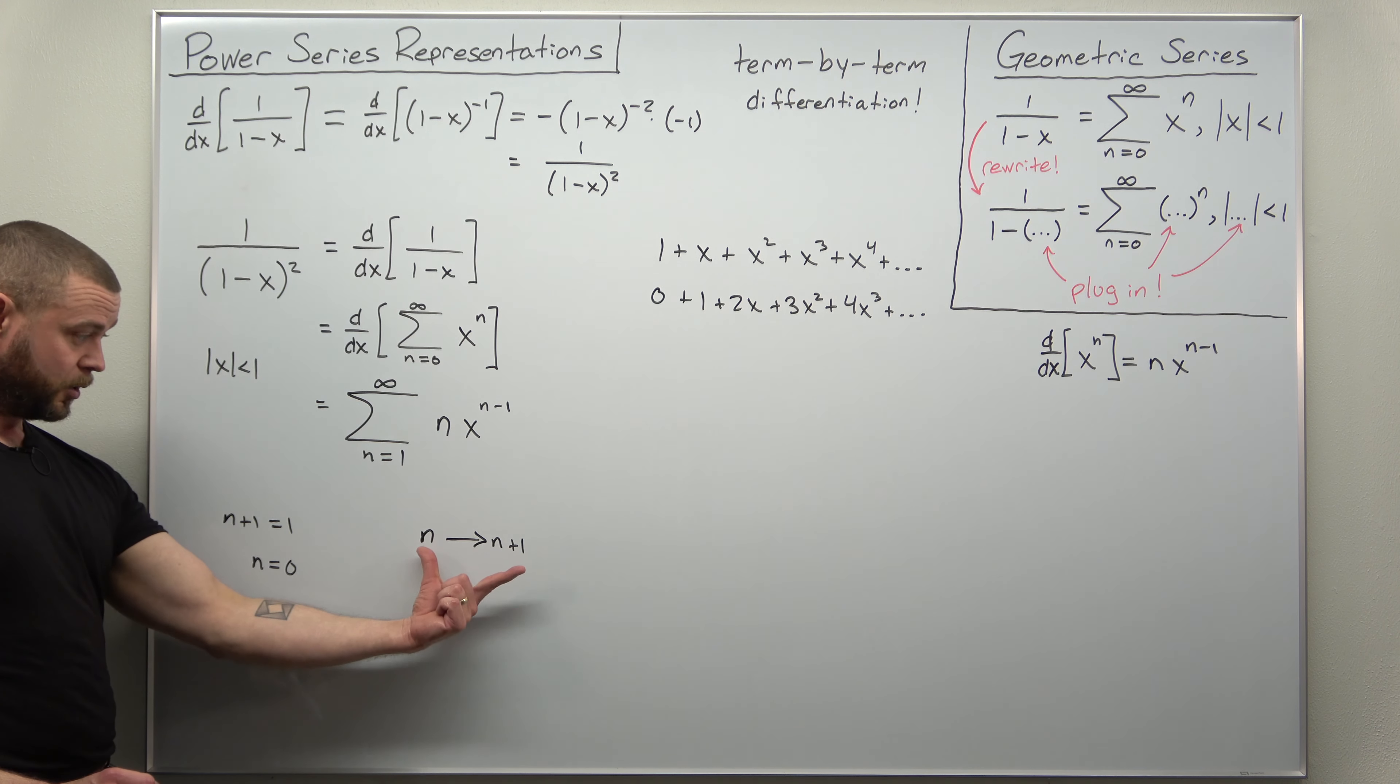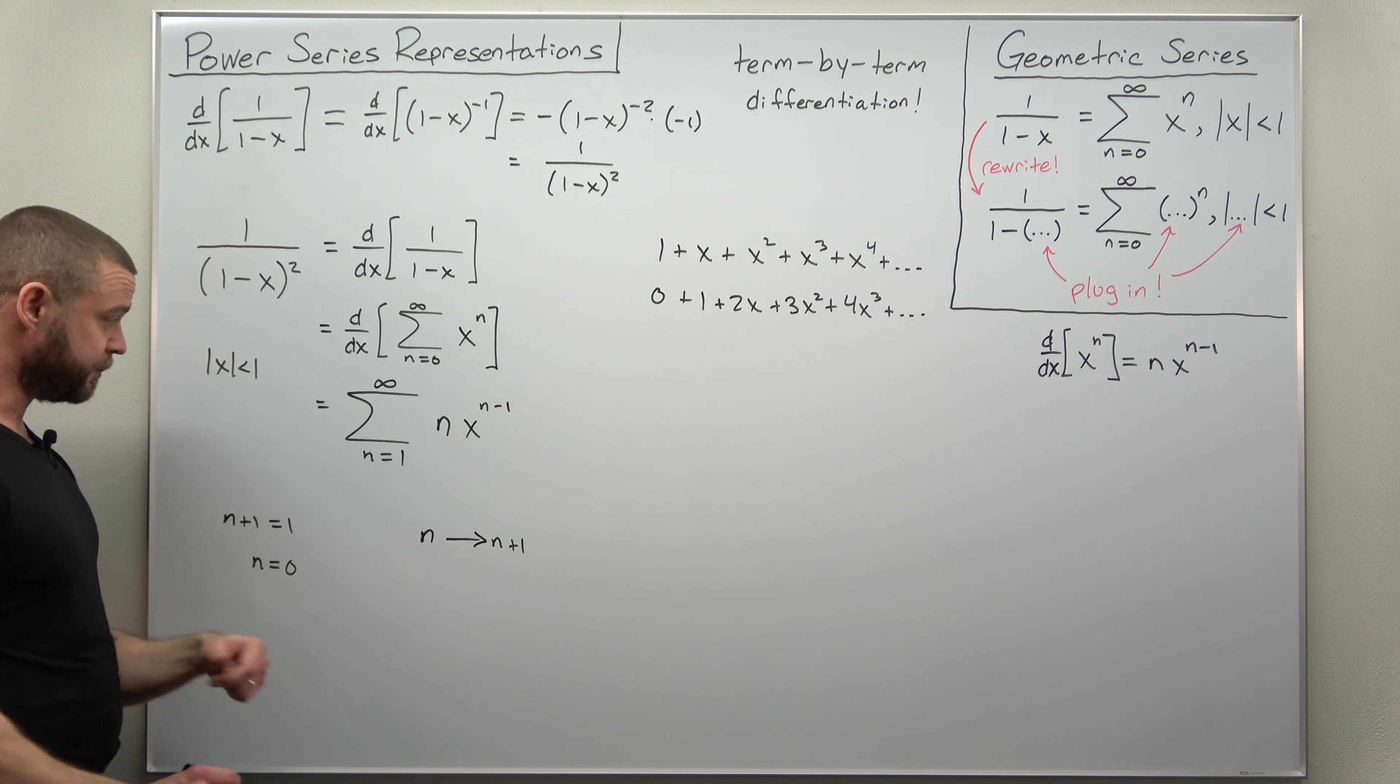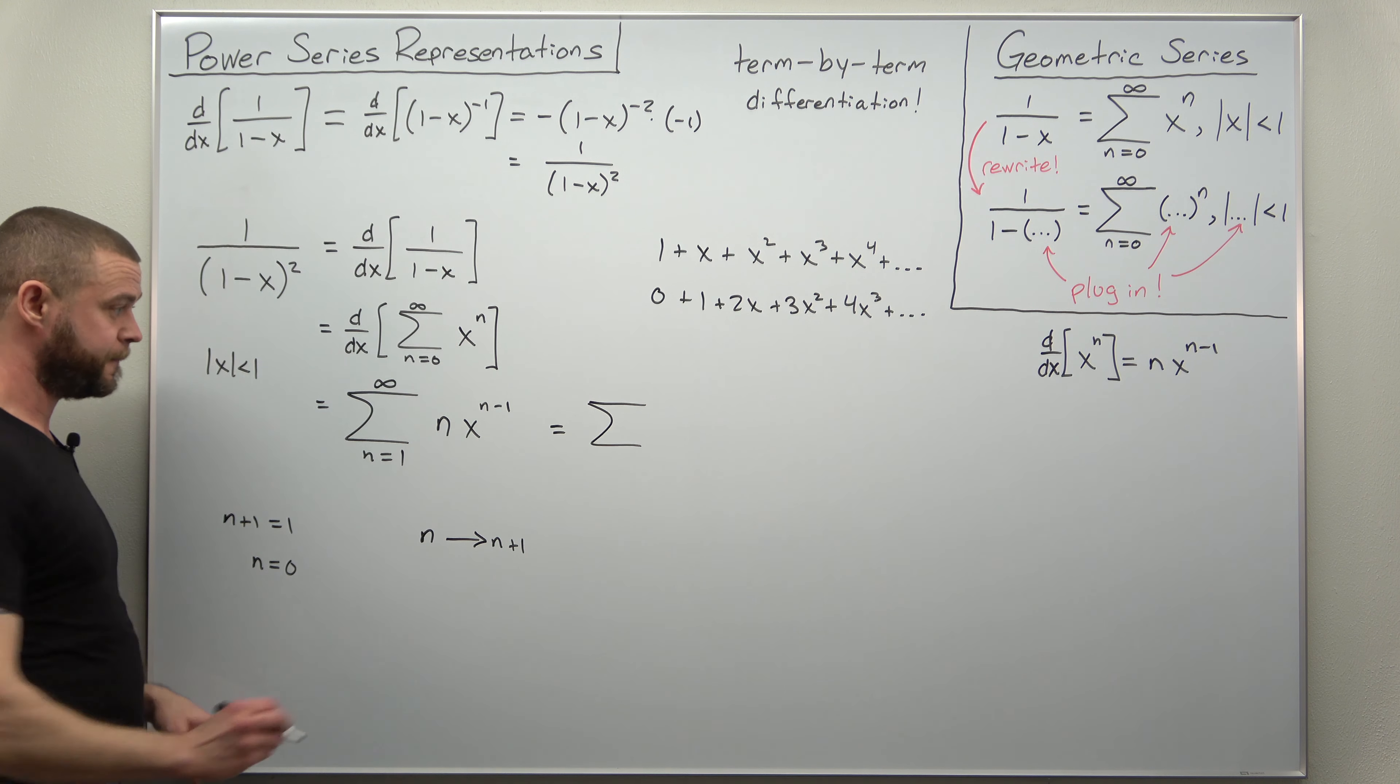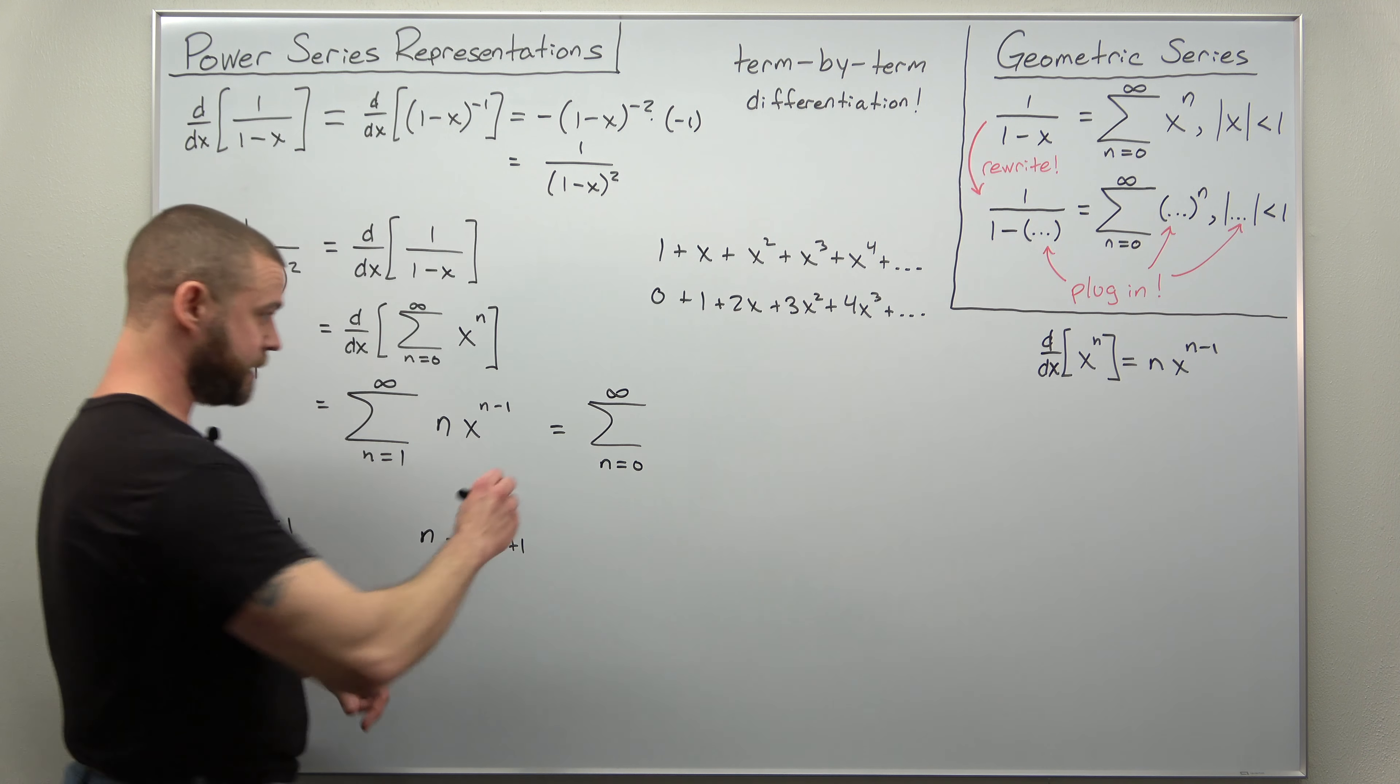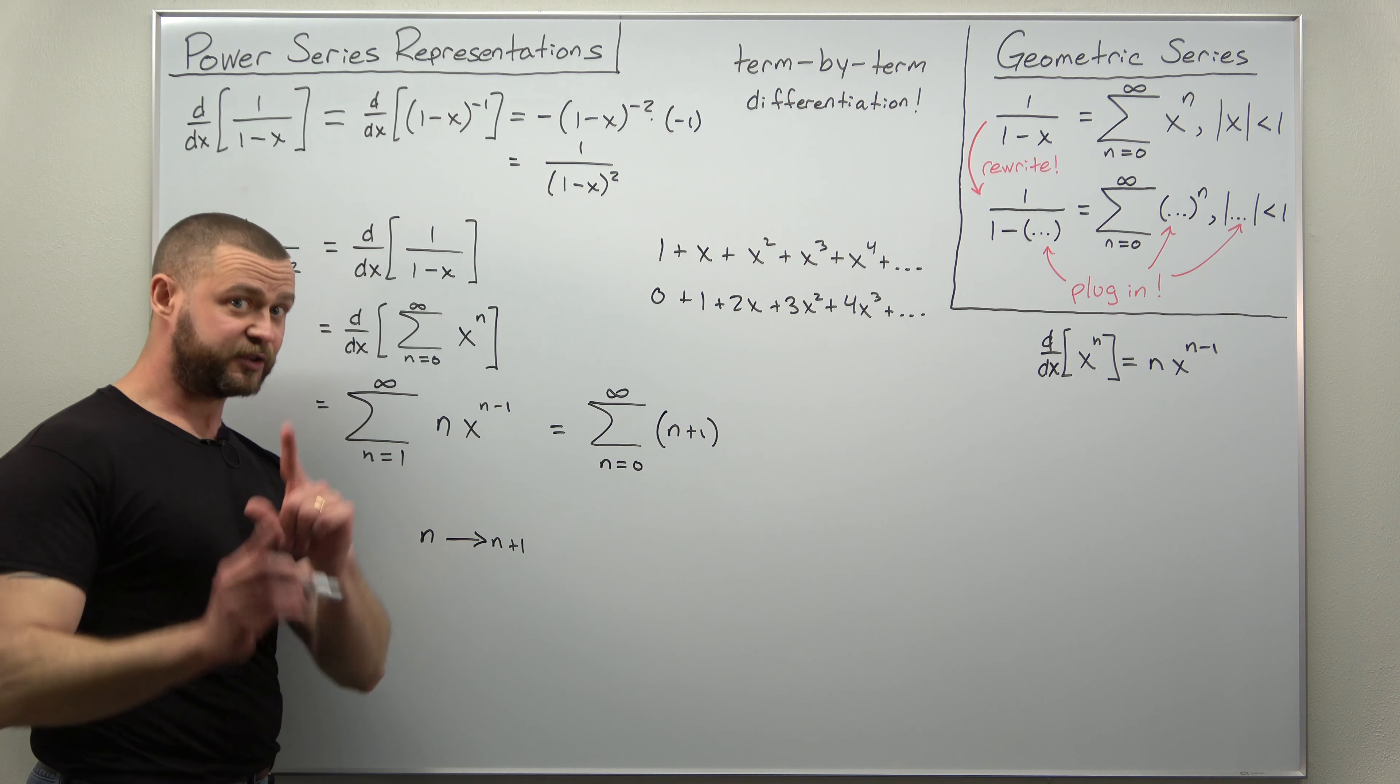Once you make that shift, that's usually the tricky part for students, changing the starting index. When you shift, your summation now starts at n equals 0, still goes to infinity, n is being replaced with n plus 1, and your power of x becomes x to the n plus 1 minus 1 which cancels to x to the n.